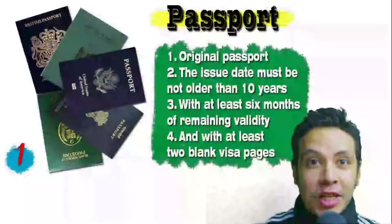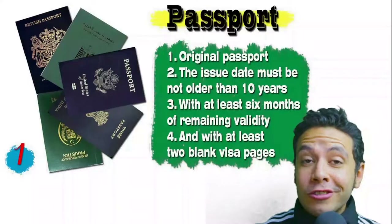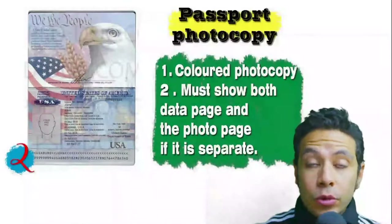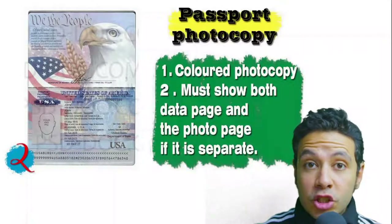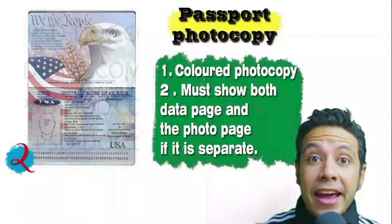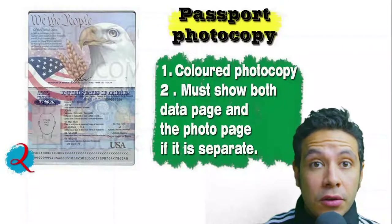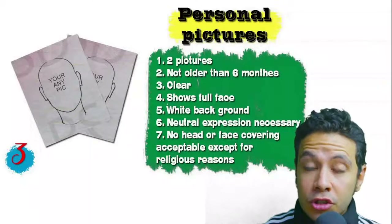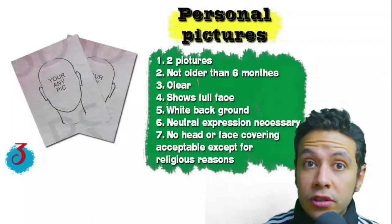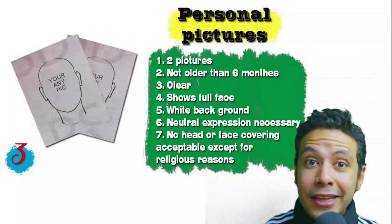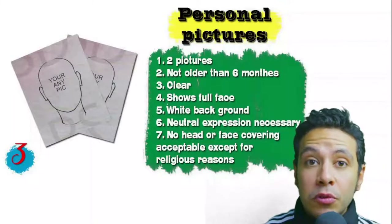For required documents: your passport must be original, not older than 10 years, with at least six months of remaining validity and at least two blank visa pages for stamps. You will also likely need a photocopy — one or more — preferably colored, showing both the data page and photo page. For personal pictures, you will need at least two photos — new, not older than six months — clear, showing your full face, preferably with a white background, with normal neutral expressions. No head or face covering is acceptable except for religious reasons.